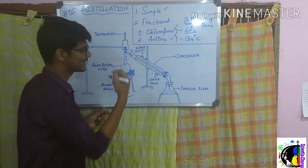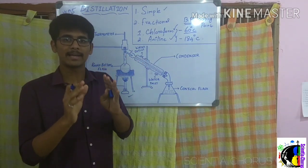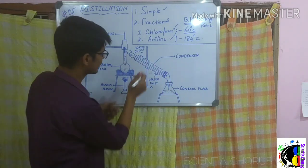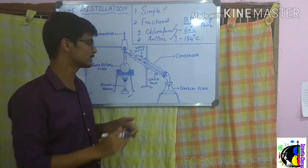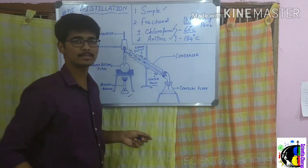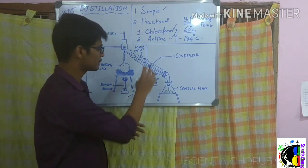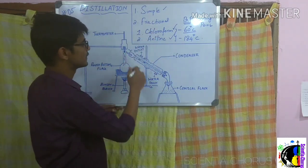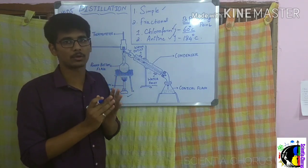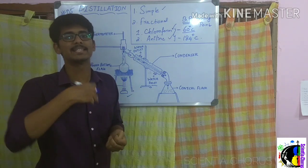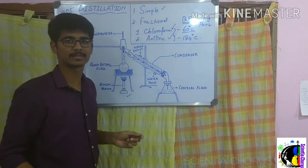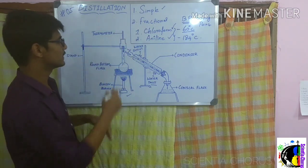We need to recover liquid chloroform from the mixture. The vapor enters the condenser and passes through it. The condenser contains water in this area — there is a water inlet and a water outlet — so this region is filled with water. Due to the cold temperature prevailing in this area, the chloroform vapor changes to liquid state. The vapor gets condensed and changes to liquid form, which slowly comes down and falls into the conical flask.